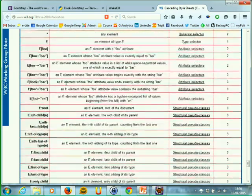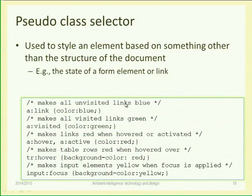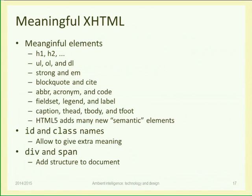The idea is that we should create our HTML with elements as meaningful as possible, using the correct tags, and then apply IDs and class names to these elements semantically — according to the meaning and content of the page. When I write the HTML, I should apply IDs and classes according to meaning. Later, I will develop a style sheet file that will give a visual style to these elements, which can be changed even later.